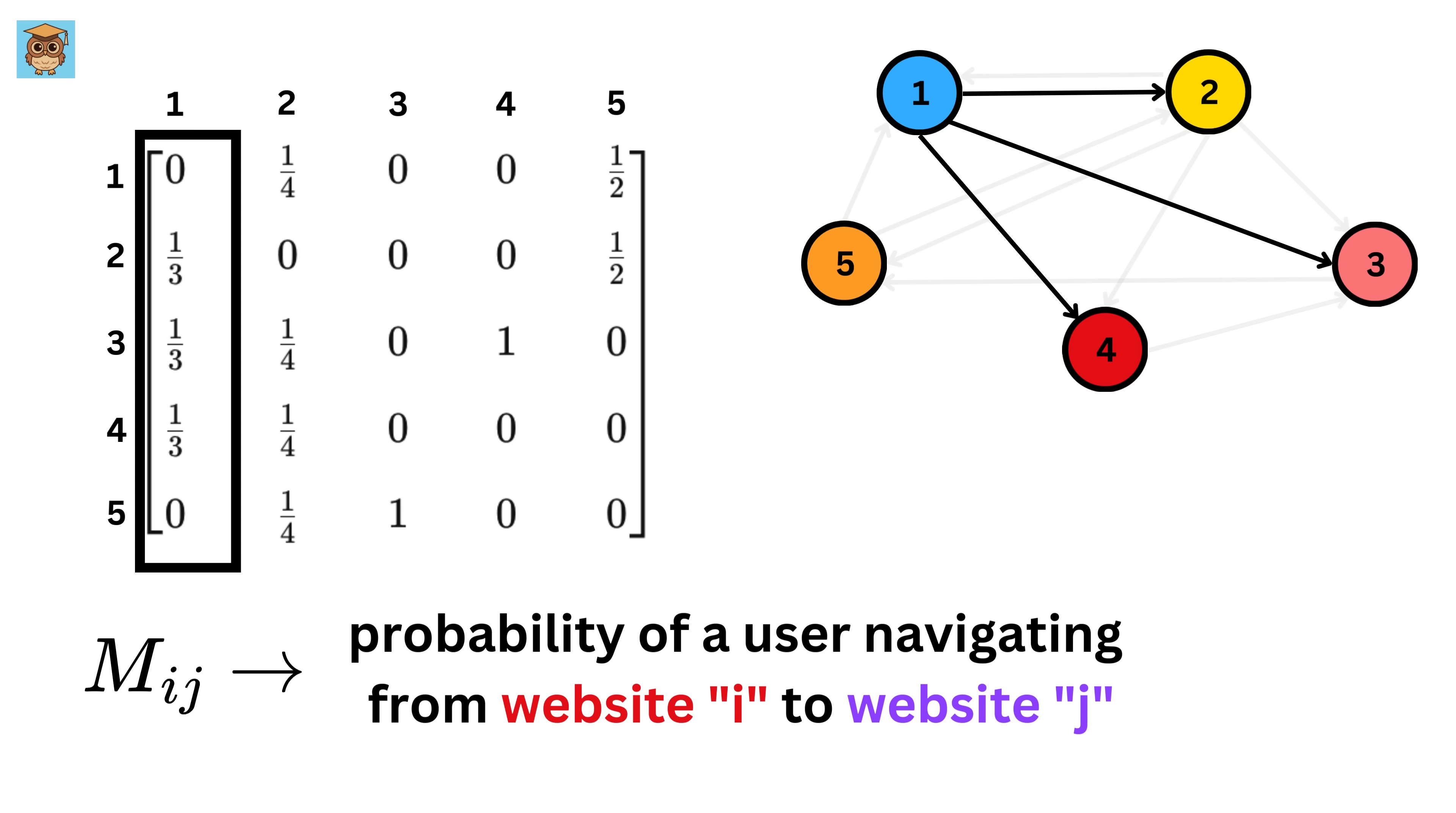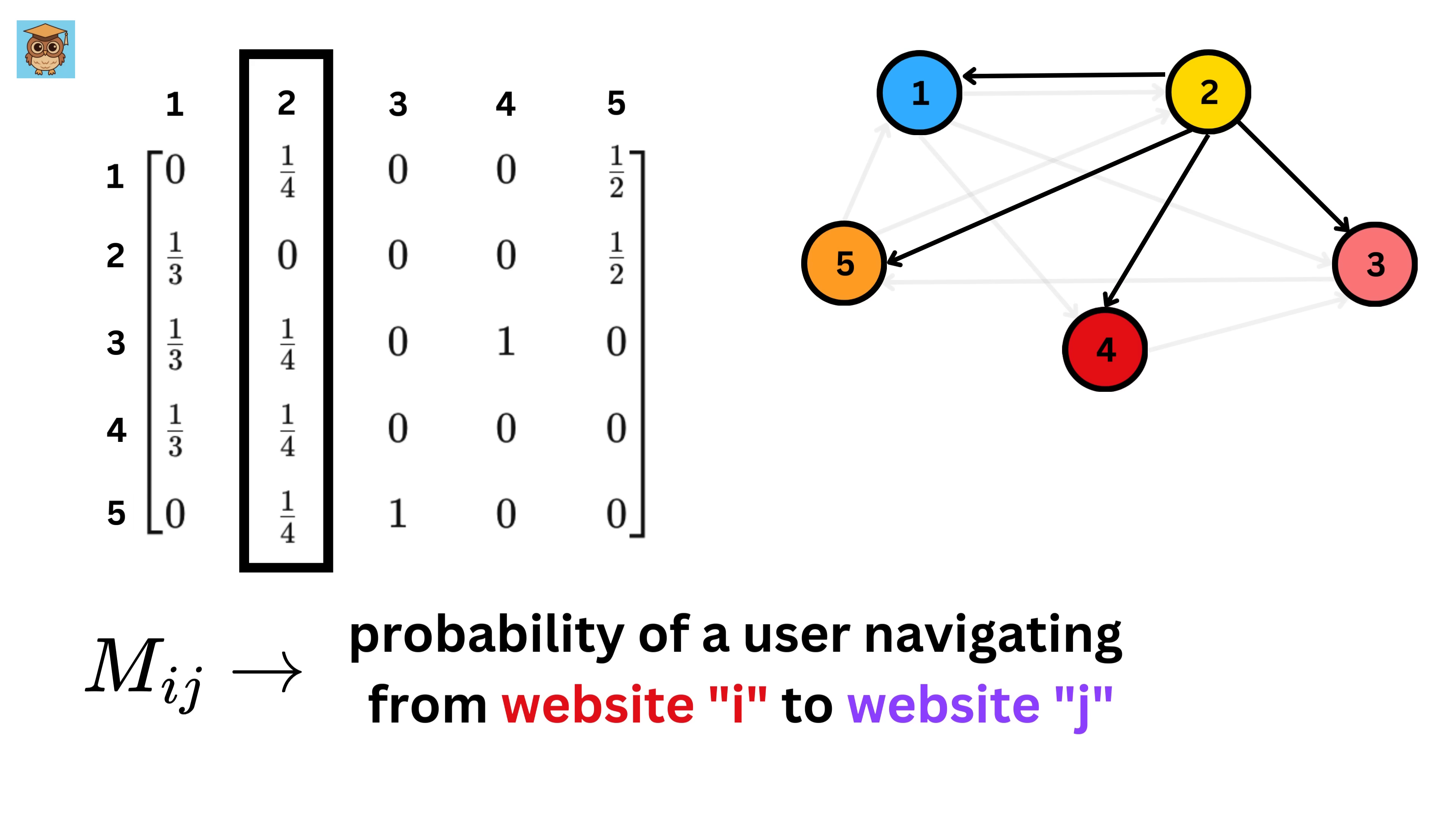Now let's break it down. If you look at the first column, there are three outgoing links in website 1 which goes to website 2, 3, and 4, and thus all of them have a value of 1 over 3, which means there is a one-third chance of the user navigating from website 1 to website 2 or 3 or 4. Since we do not have any link from 1 to itself, that is why it has a zero value. Also, there is no outgoing link between website 1 and website 5, and thus this value is also zero.